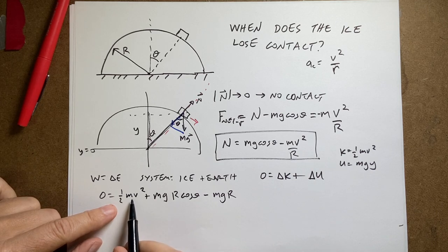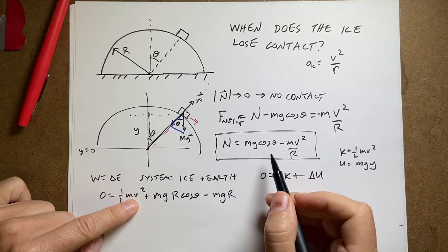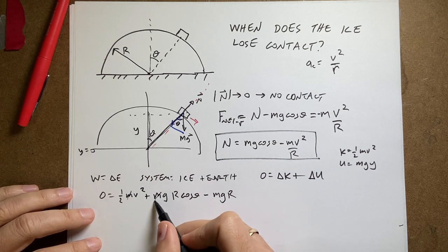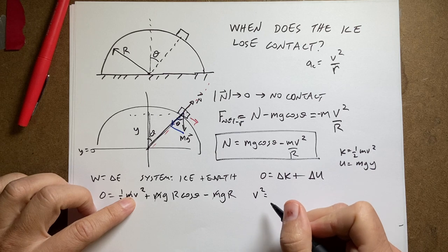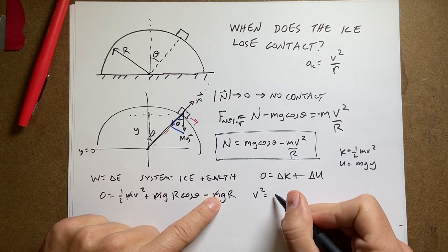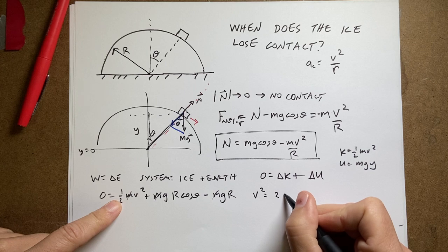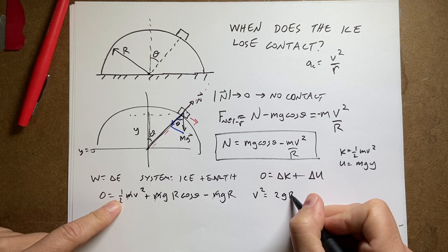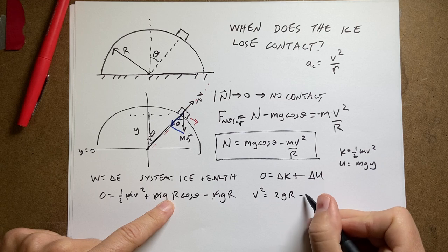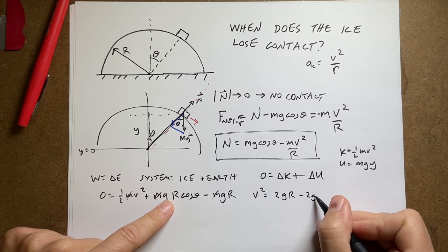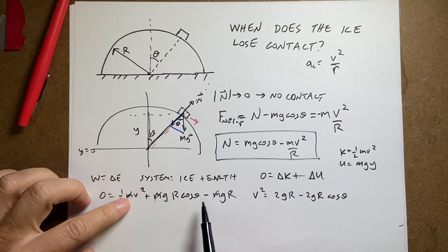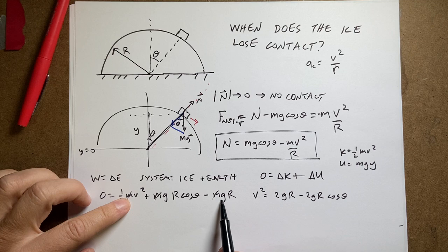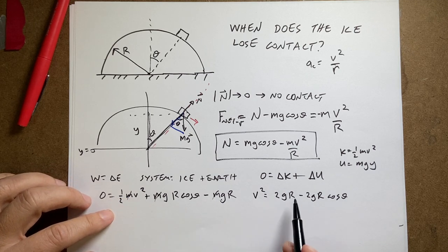So I can solve this for v squared. The first thing, the mass cancels. So I get v squared equals, move this to the other side, multiply by 2. I get 2gr minus 2gr cosine theta. What I did was I subtracted this from both sides. I added that to both sides and multiply both sides by 2. And I get that.